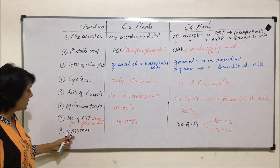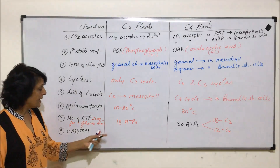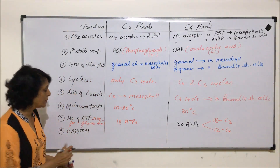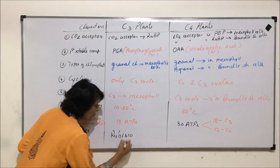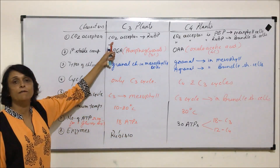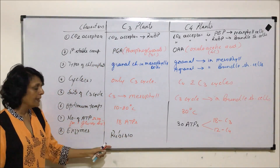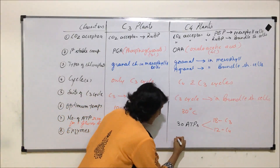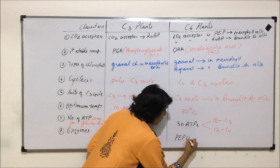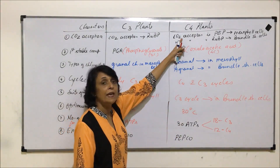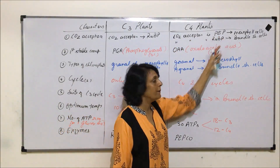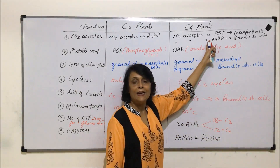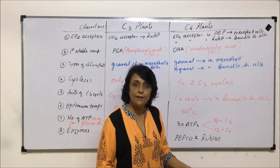Regarding enzymes: in C3 plants, the key enzyme is RuBisCO, which helps in carboxylation of RUBP. Other enzymes like NADP reductase are also required. In C4 plants, the enzymes required are PEPco — that is PEP carboxylase — which helps in carboxylation of PEP, as well as RuBisCO, which adds carbon dioxide to RUBP in bundle sheath cells.